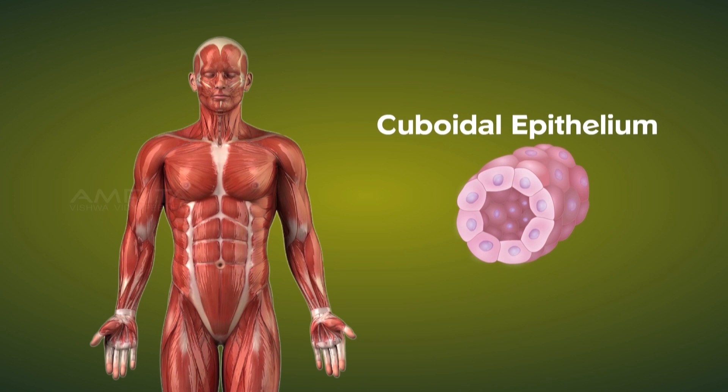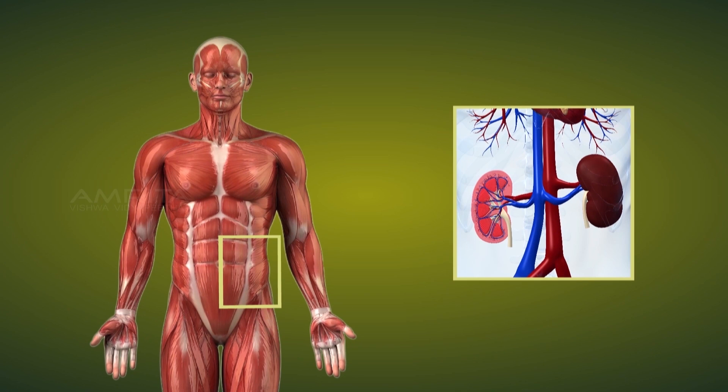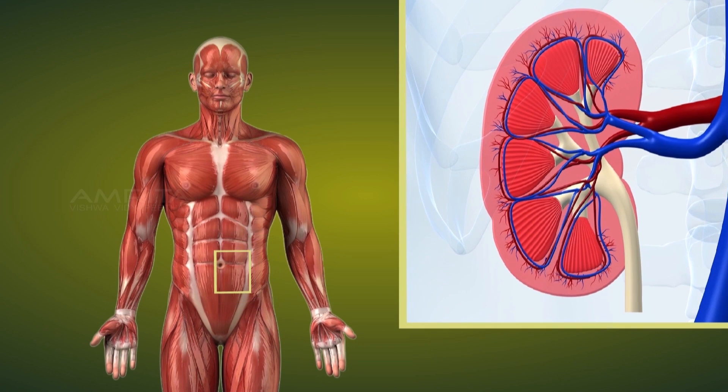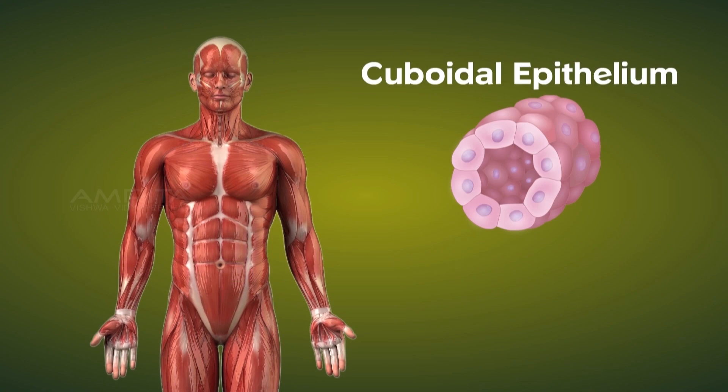Cuboidal epithelium aids in absorption and provides mechanical support. It forms the lining of kidney tubules. It is shaped like a cube.